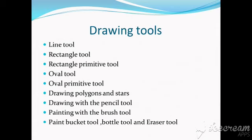Then we are having the rectangle tool. The rectangle tool is having different options like rectangle tool, oval tool, rectangle primitive tool, oval primitive tool, and the poly star tool. So if I want to draw a simple rectangle, I must select the rectangle tool and then drag it on the stage. But if I want to use the rectangle primitive tool, we have to select a different radius for that.